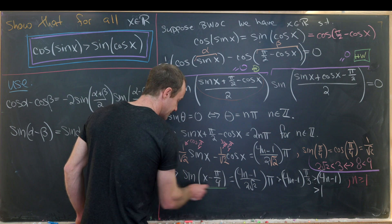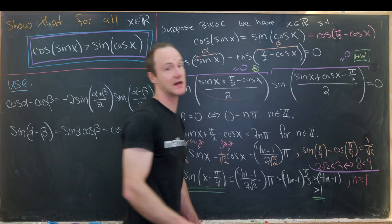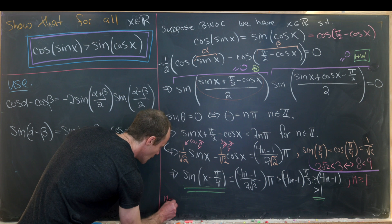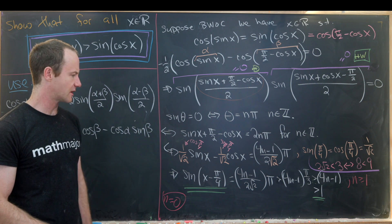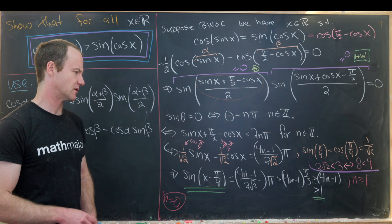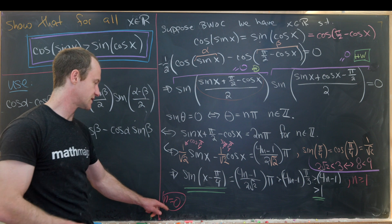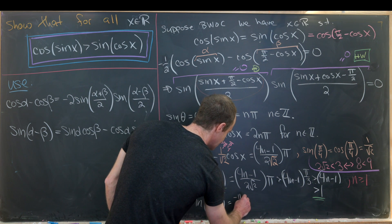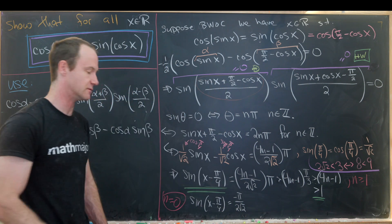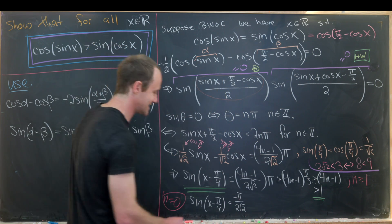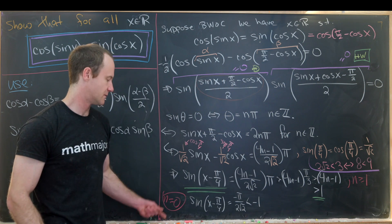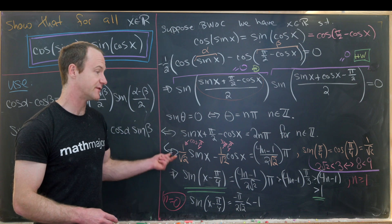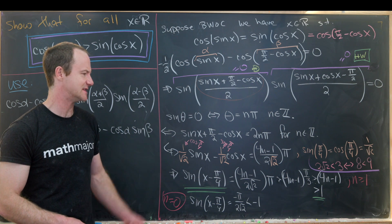That's a contradiction since sine is bounded by 1. We also check n = 0: sine of (x - π/4) would equal -π/(2√2), which is strictly less than -1 by the same argument — impossible since sine is always between -1 and 1. The case when n is negative works very similarly, yielding another contradiction.